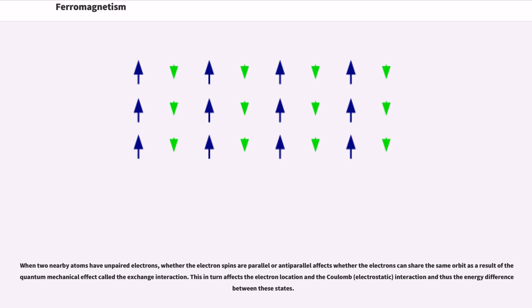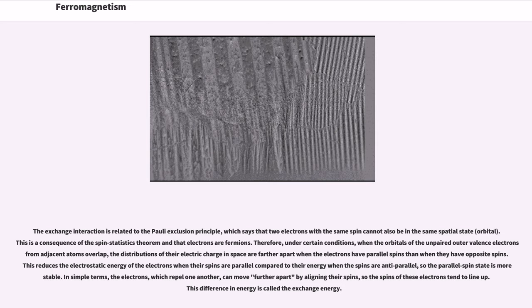When two nearby atoms have unpaired electrons, whether the electron spins are parallel or anti-parallel affects whether the electrons can share the same orbit as a result of the quantum mechanical effect called the exchange interaction. This in turn affects the electron location and the Coulomb, electrostatic, interaction and thus the energy difference between these states. The exchange interaction is related to the Pauli exclusion principle, which says that two electrons with the same spin cannot also be in the same spatial state, orbital. This is a consequence of the spin statistics theorem in that electrons are fermions.